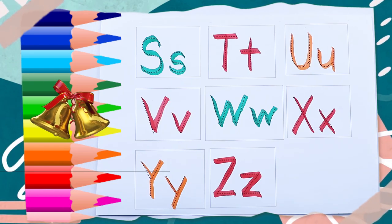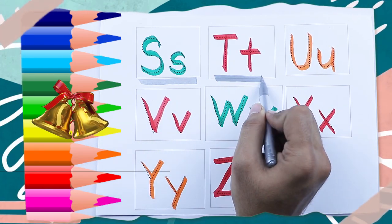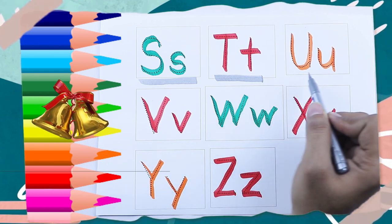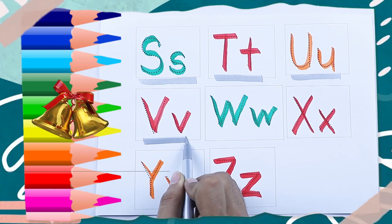Green color S, S for sheep, red color T, T for tiger, orange color U, U for umbrella, red color V.